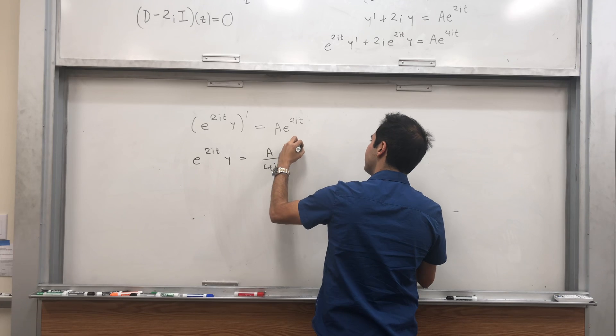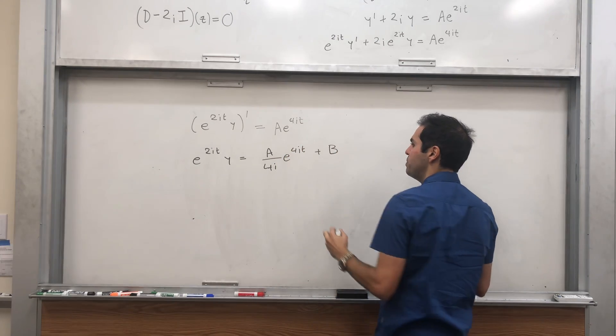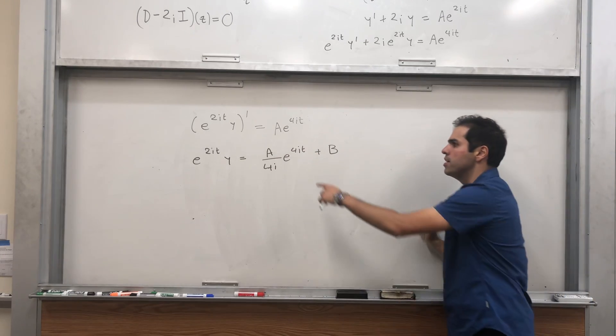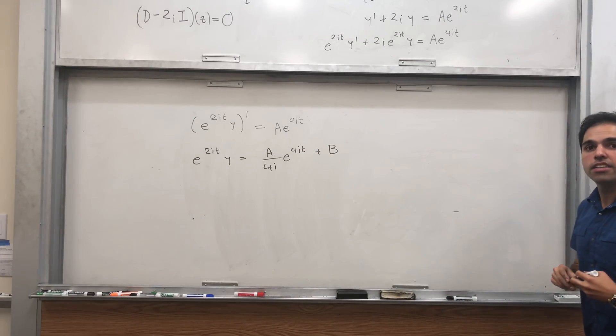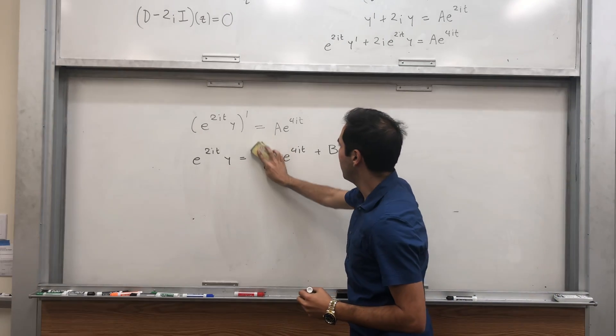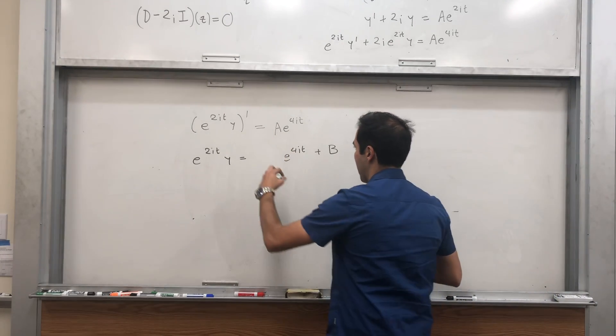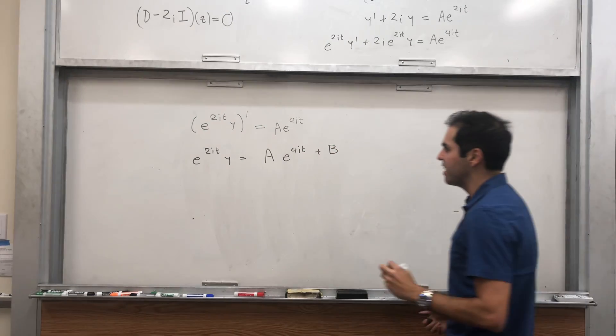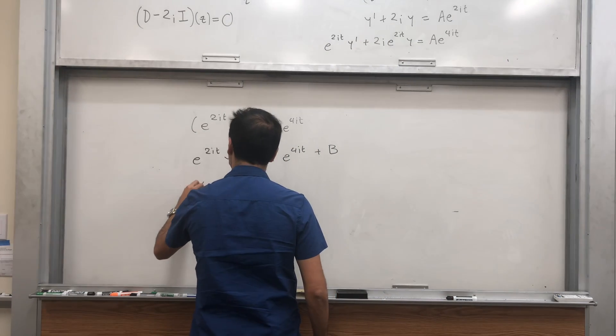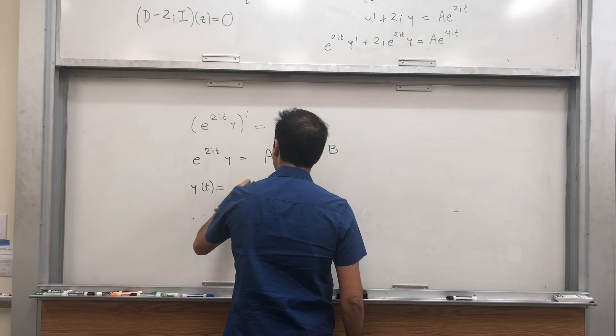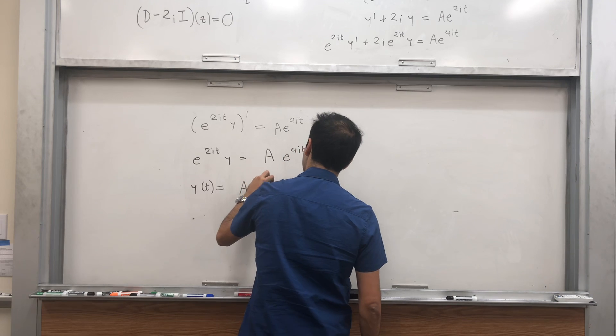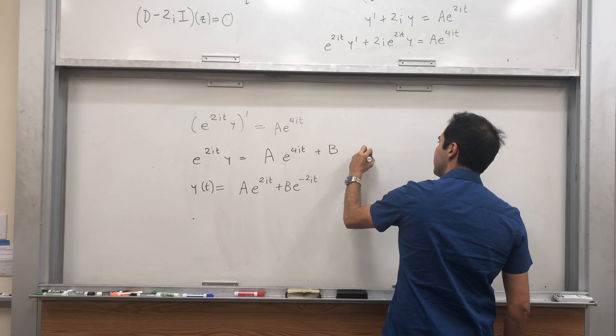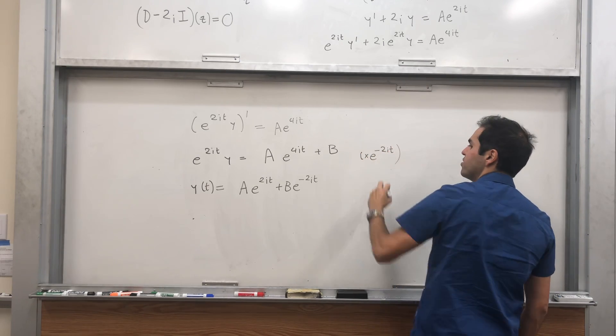e to the 4it, plus some constant, let's call it B. But remember A is a generic complex number, so A over 4i is also a generic complex number. So we can just replace this by A. And then, what we get: y of t equals Ae to the 2it plus Be to the minus 2it.